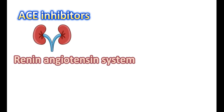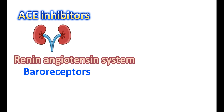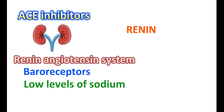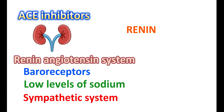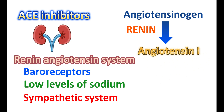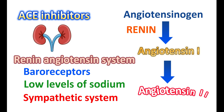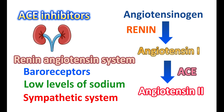ACE inhibitors work by inhibiting the renin-angiotensin system, which is activated when blood pressure is low. Baroreceptors detect low blood pressure at arterial blood vessels and stimulate the release of renin, which can also be released in response to low sodium levels in renal tubules or sympathetic system stimulation. Renin acts as a cleavage enzyme converting angiotensinogen — a precursor synthesized in the liver — to angiotensin-1. This angiotensin-1 is then converted into angiotensin-2 by the enzyme angiotensin-converting enzyme (ACE).